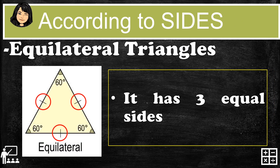Now looking at the different triangles according to sides: the equilateral triangle has three equal sides. The line in the middle of each side represents equal sides. As you can see on the image, it has only one line on each side, meaning all three sides have equal measurement.